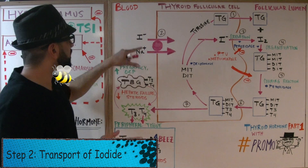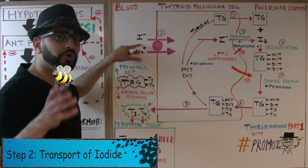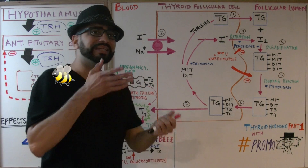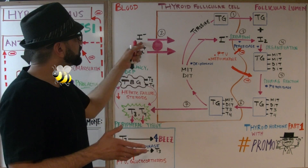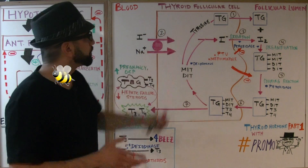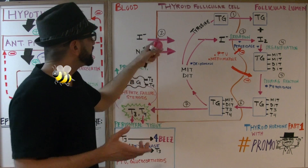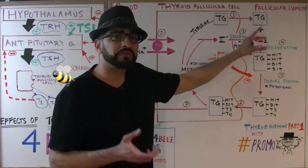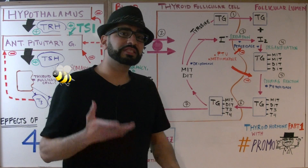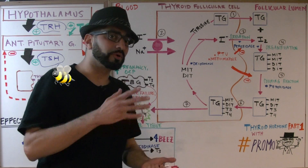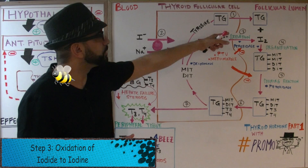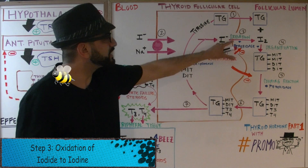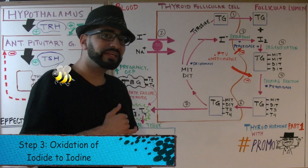Step 2: the iodide transport, also referred to as the iodide-sodium co-transport. It's actively pumping iodide into the thyroid follicular cell. We need this iodide so that it can be brought all the way to the follicular lumen to contribute to the synthesis of the thyroid hormone.